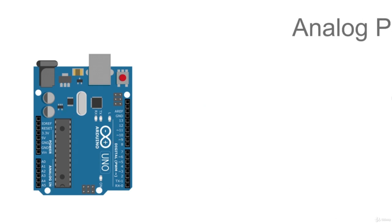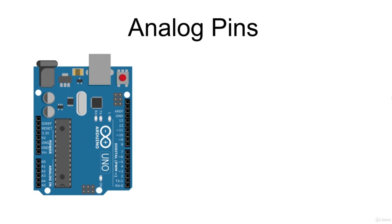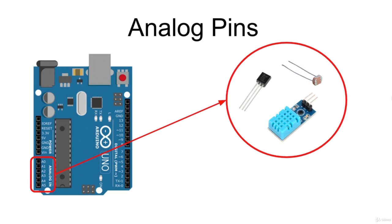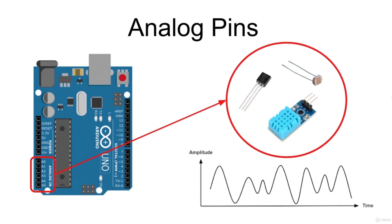The Arduino Uno board has six analog input pins, A0 through A5. These pins can read the signal generated from analog sensors like a light sensor, temperature sensor, or humidity sensor, and convert this physical value into a number that can be used by the microprocessor. Arduino can accept analog signals in the range 0V to 5V and convert them into a number in the range 0 to 1023.